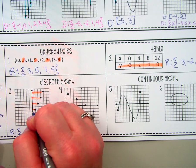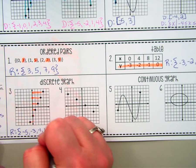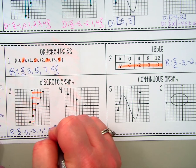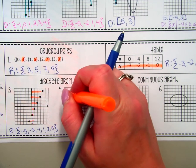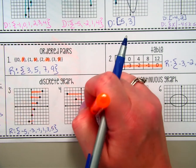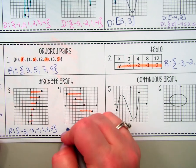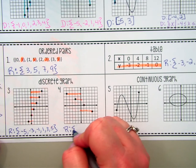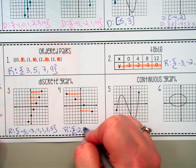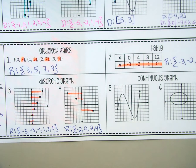For the first discrete graph, the range values are 1, 2, 3, negative 5, negative 3, negative 1, 1, 3, and 5 — you're looking at the y's. For number 4, the range is negative 2, 0, 2, and 4. Same process as with your domain, only we are looking at the y's instead.